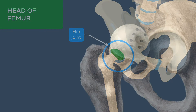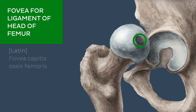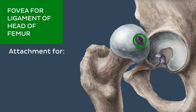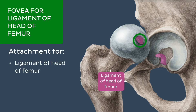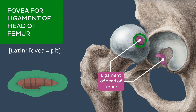The surface of the head of the femur is smooth and coated with hyaline cartilage, except in a medially located area known as the fovea, which is a depression for the attachment of the ligament of the head of the femur. Fovea in Latin means pit, which is exactly what this small bony indentation represents.